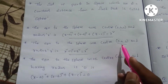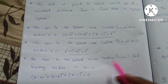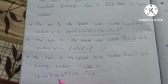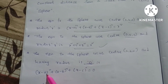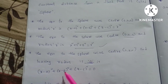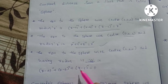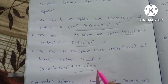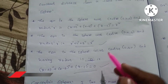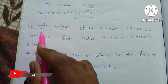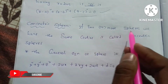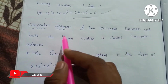That means when the center is (a, b, c) and radius is 0: (x minus a) whole square plus (y minus b) whole square plus (z minus a) whole square is equal to 0. This is the center of the sphere. Concentric spheres: if two or more spheres have the same center, they are concentric spheres.